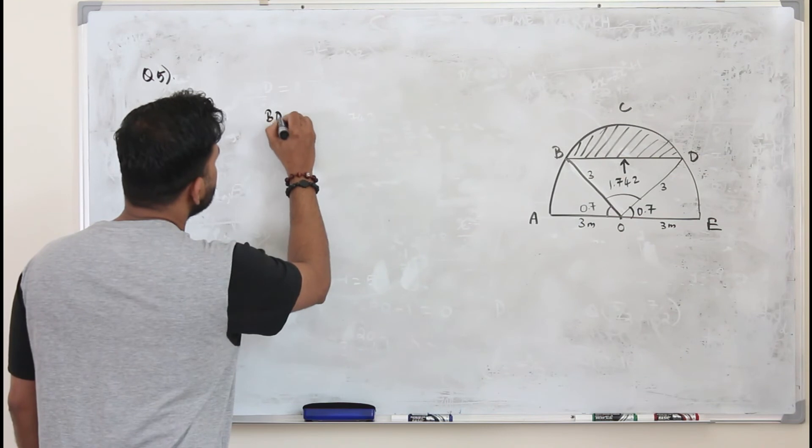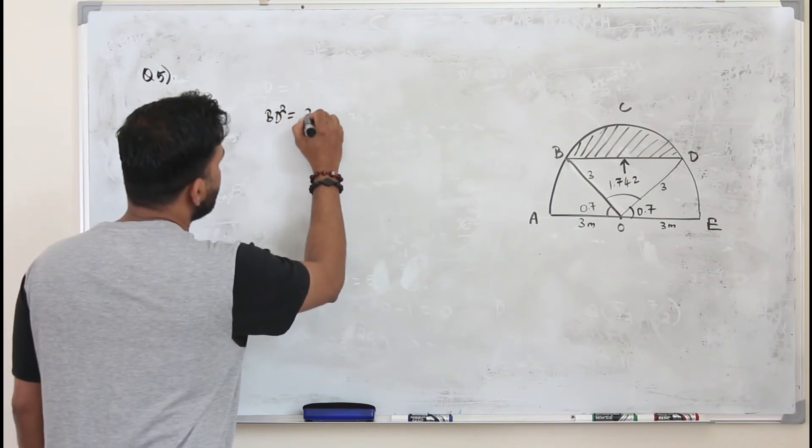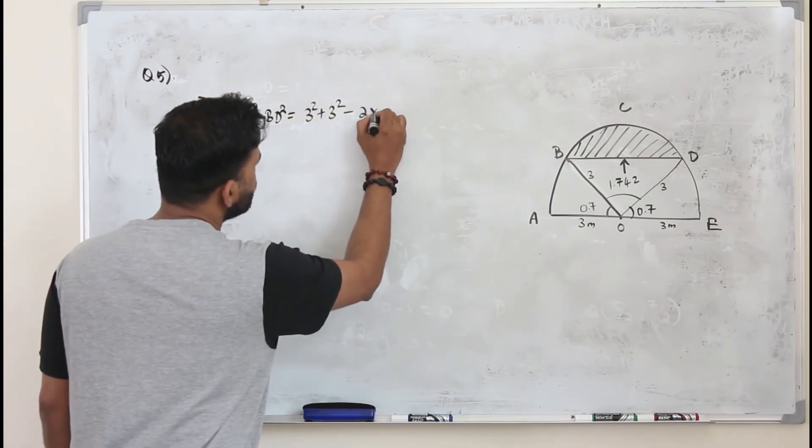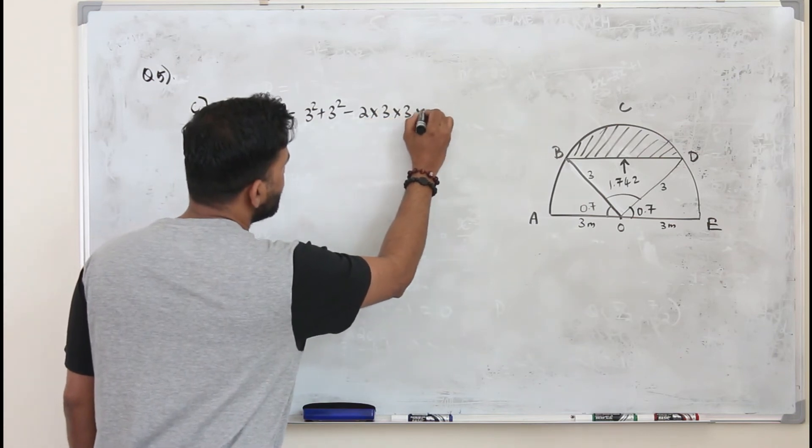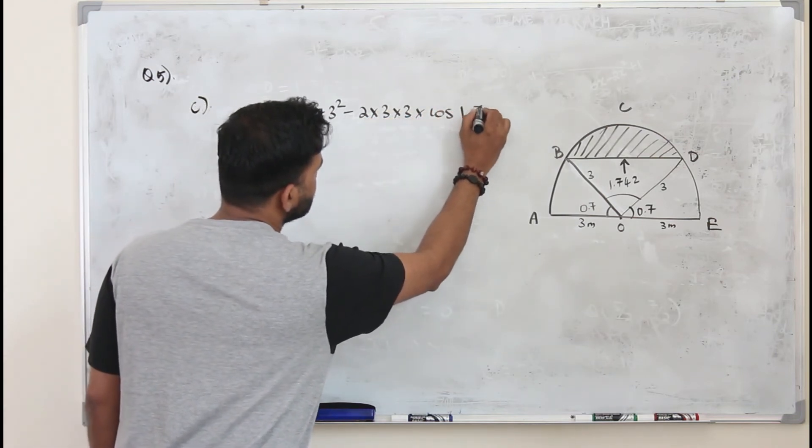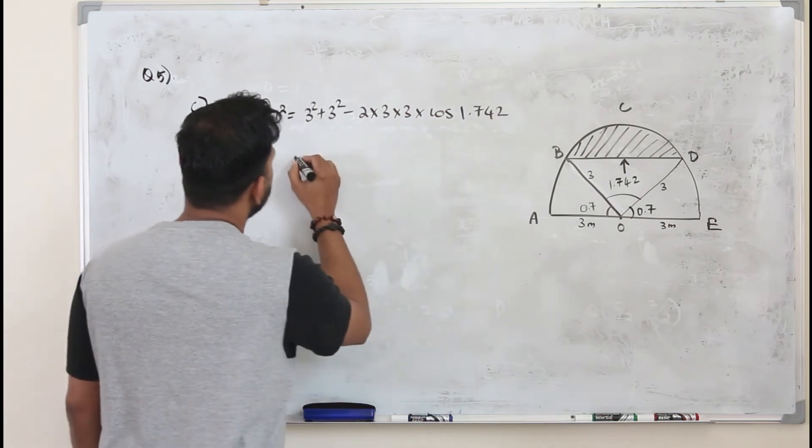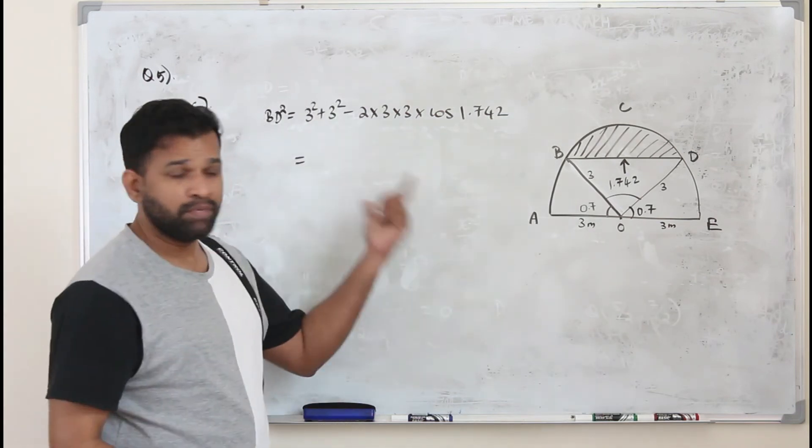You can use cosine rule to find the opposite side. So BD squared equals A squared plus B squared minus 2AB cos theta. So you can find the length of BD.